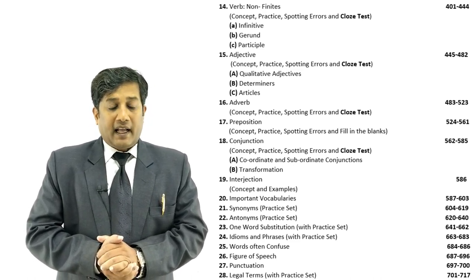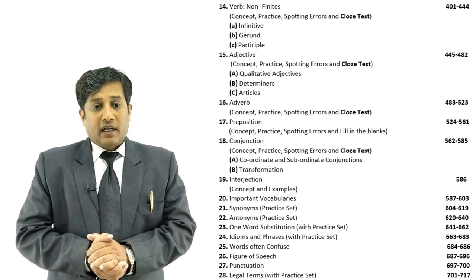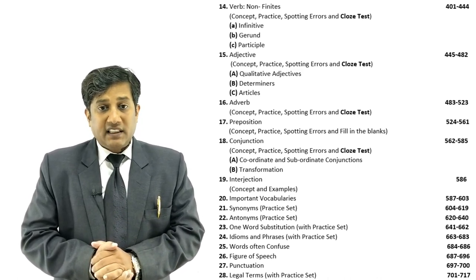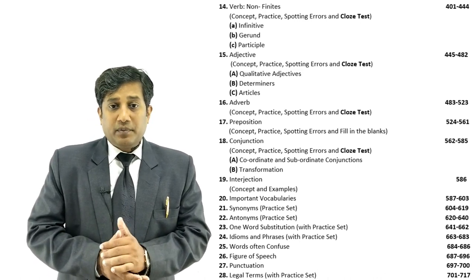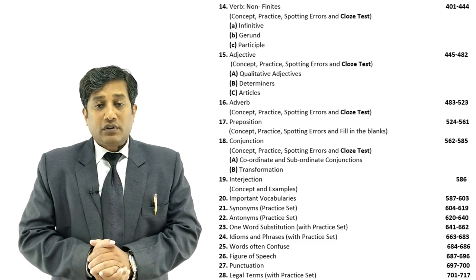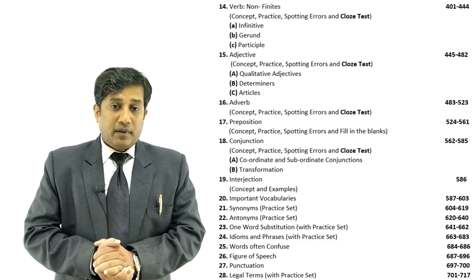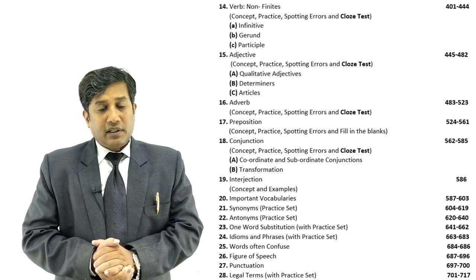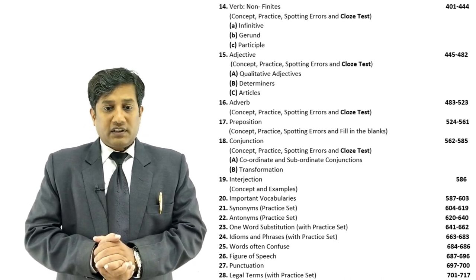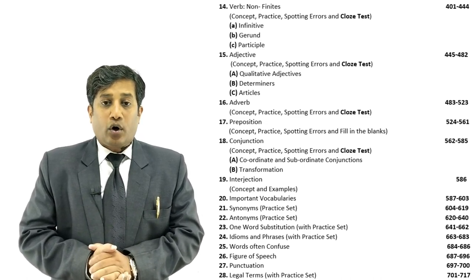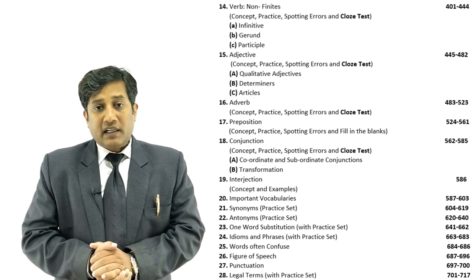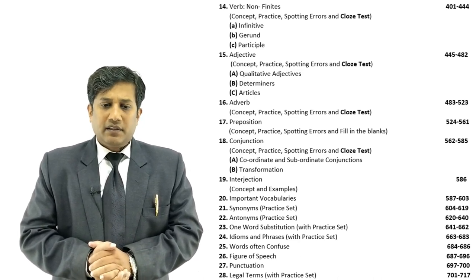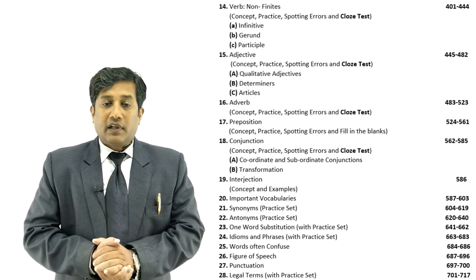The 16th topic is Adverb. The concept of adverb is explained very briefly but clearly, with practice, spotting errors, and cloze test. As you can see, for all chapters, cloze tests have been prepared. The next topic is Preposition — concept, practice, spotting errors, and fill in the blanks are given. Conjunction also includes concept, practice, spotting errors, and cloze test. Conjunction has two parts: coordinate and subordinate conjunction, and transformation is also covered here. Then comes Interjection, which is a very small part — only concept and examples are given.